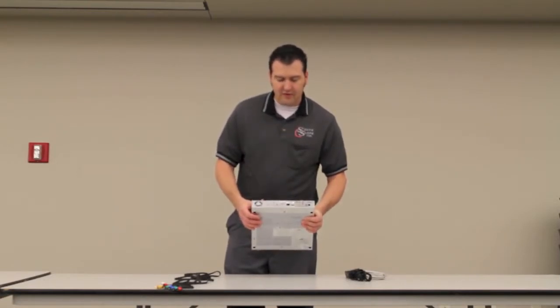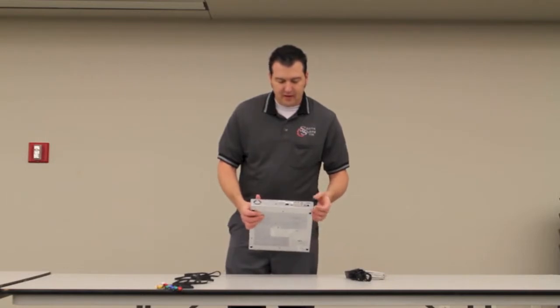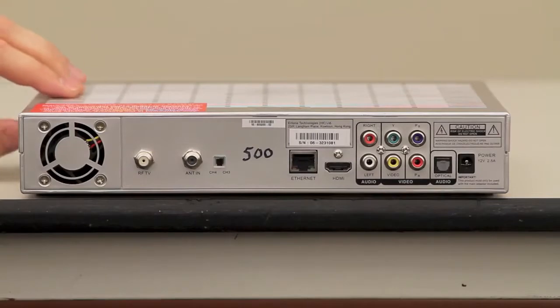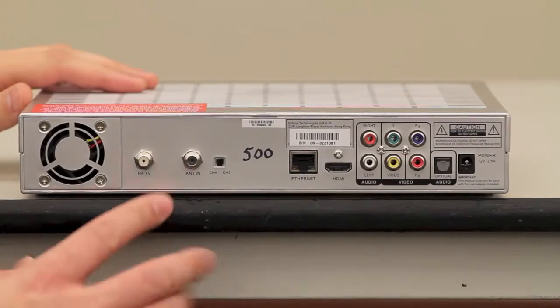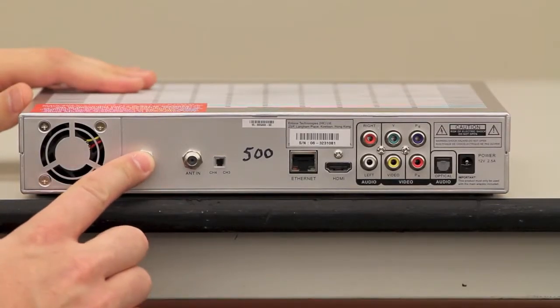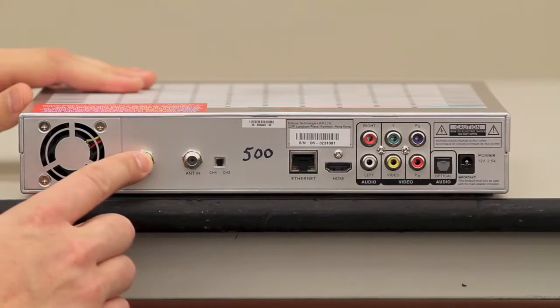Before we start, I want to go over some of the outputs on the set top box and the plug-ins. The connections on the back of the Entone set top box are RF to TV, which is your standard coax cable connection, your Ethernet,